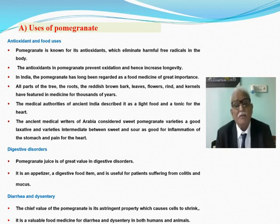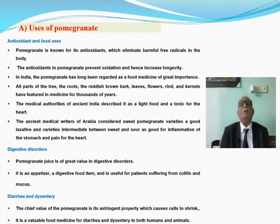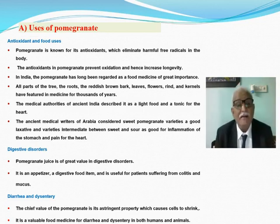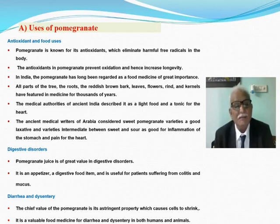In India, the pomegranate has long been recorded as a food medicine of great importance. All parts of the tree — the roots, the reddish-brown bark, leaves, flowers, rind, and above all the kernels — have featured in medicine for thousands of years. Medical authorities of ancient India described it as a light food and a tonic for the heart. Ancient medical writers of Arabia considered sweet pomegranate varieties a good laxative, and varieties intermediate between sweet and sour as good for stomach inflammation and heart pain. Pomegranate juice is of great value in digestive disorders and is an appetizer.